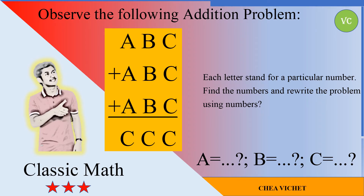Hey guys, today's video we're going to look at another awesome problem. Like you can see in front of you: ABC plus ABC plus ABC equals CCC. So what are the possible values of A, B, and C?